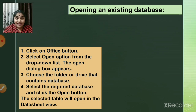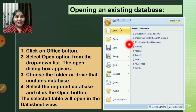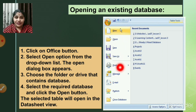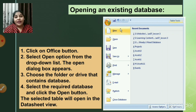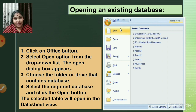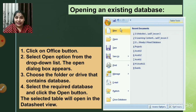The first step is to click on the Office Button — that circular button with squares. Clicking it shows a drop-down list of options. Select 'Open' from that list. A dialog box will open where you choose the folder or drive that contains your database. Select the required database and click the Open button. The selected table will then open in Datasheet View.